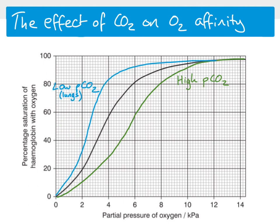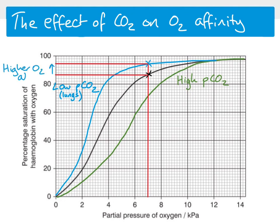The blue curve on the graph shows what happens at low carbon dioxide concentration — as seen in the lungs, where CO₂ is removed from the blood as we breathe out. At a partial pressure of oxygen of around 7 kilopascals in the lungs, normal CO₂ levels would give just under 90% saturation, but with the reduced CO₂ concentration found in the lungs, oxygen affinity increases, allowing even more oxygen to bind and load onto hemoglobin, so it carries more oxygen to the tissues.